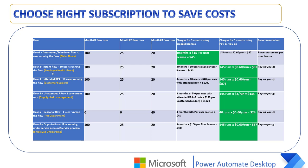In scenario two — employee health check with 10 users — the runs are the same: 100 in month one, 25 in month two, and 20 in month three. With prepaid licenses over three months: 10 users × $15 = $450. With pay as you go: 145 runs × 60 cents = $87. Comparing these two, pay as you go at $87 is far cheaper than the per user plan at $450. We recommend pay as you go for this scenario.